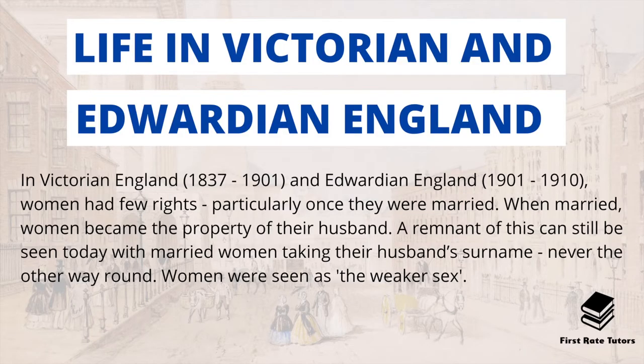Life in Victorian and Edwardian England was fairly challenging for women during this time because they had few rights. The Victorian England period covers Queen Victoria's reign between 1837 to 1901, and Edwardian England — King Edward who followed Queen Victoria — lasted between 1901 to 1910. This period was a vastly different time for England where women really had very few rights, especially once they were married. Indeed, once they were married, women became the property of their husbands — a remnant of this can be seen today with married women taking the husband's surname.